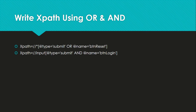In an AND expression, you want both conditions to be true. For example, the type of the button should be 'submit' AND the name written on it should be 'btnLogin'. In this case, only if both conditions are satisfied will it go and click on that button.